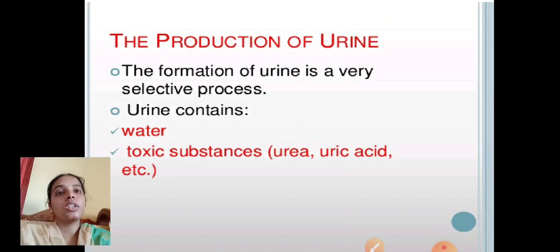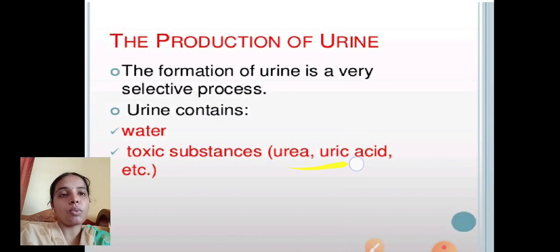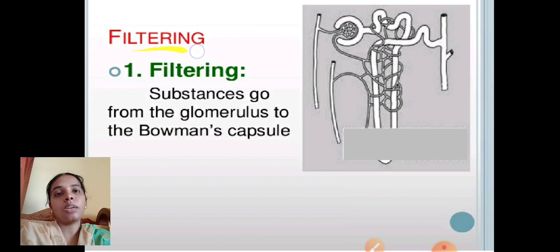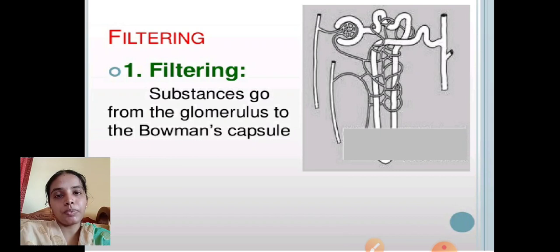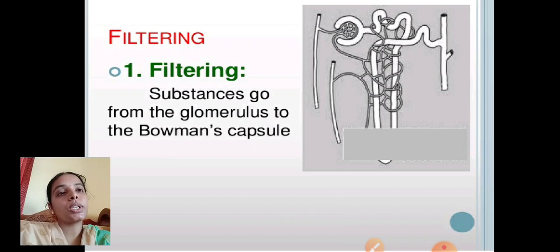The production of urine: the formation of urine is a very selective process. Urine contains water and toxic substances in the form of urea, uric acid, etc. The first step of urine formation is filtration — substances pass from the glomerulus to the Bowman's capsule. The glomerulus filters the nitrogenous waste-containing blood through pores in its cells, transferring primary urine towards the Bowman's capsule.